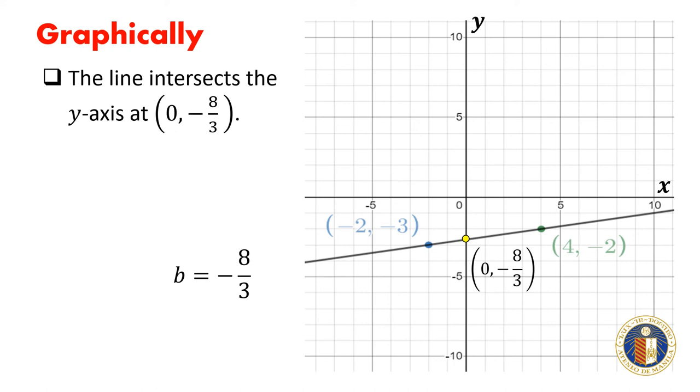To verify the slope, if we select two points on the line with integer coordinates, for example, the point (-2, -3) and the point (4, -2), notice how we move from one point to another.